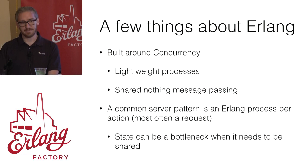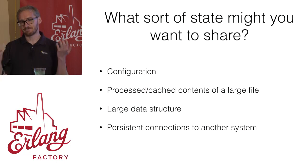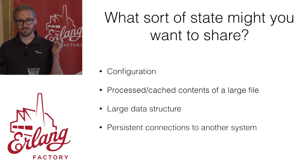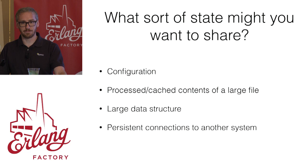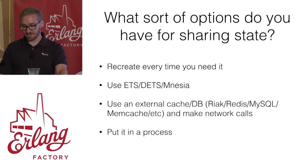Often when you spawn per request, you have certain information every request needs to access — state. You need a way to get at that state. This state could be configuration, a large cached file you're keeping around to serve out really fast, a large data structure like a search tree in memory you don't want to recreate every time, or persistent connections to a database system kept in a process.